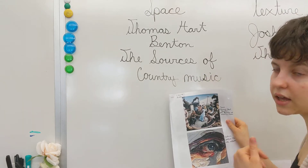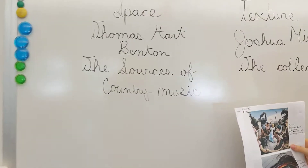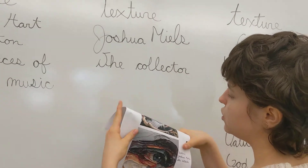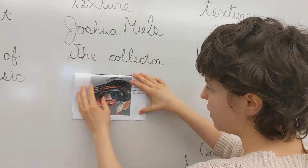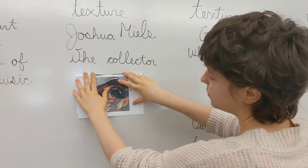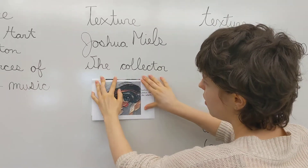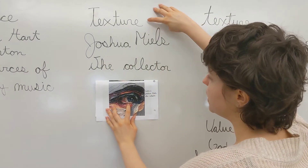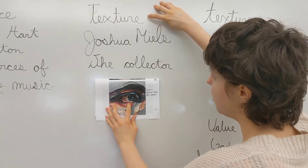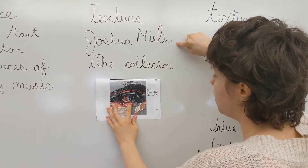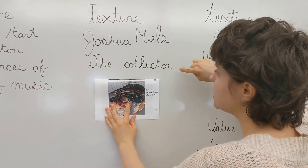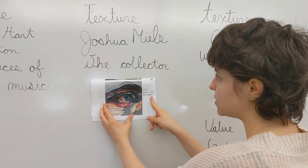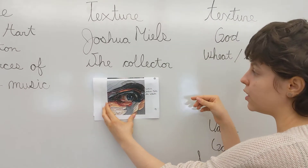All right. Now we're going to move on to the eye one. So right there you have the eye, and it's dealing with the texture element. It's by Joshua Miles, and the painting is called "The Collector." Write it on the side just like I did. Pause the video real fast.